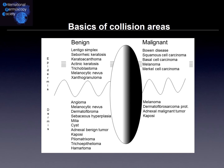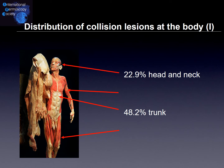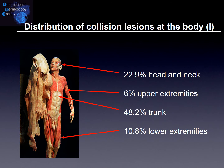When we move to our study of the collision lesions at the body, what did we find? Most of the collision lesions were found at the trunk — nearly 50 percent — followed by around 25 percent at the head and neck, and lower and upper extremities were less common in our study.